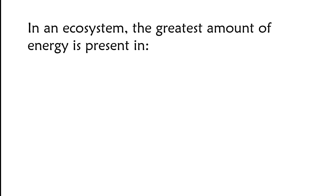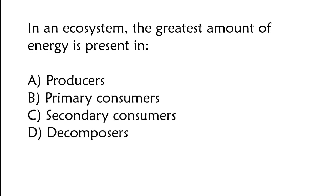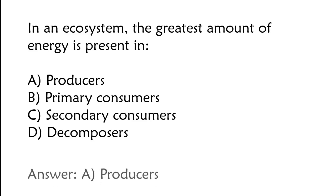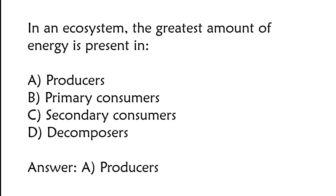In an ecosystem, the greatest amount of energy is present in: A) producers, B) primary consumers, C) secondary consumers, D) decomposers. The correct answer is option A, producers.